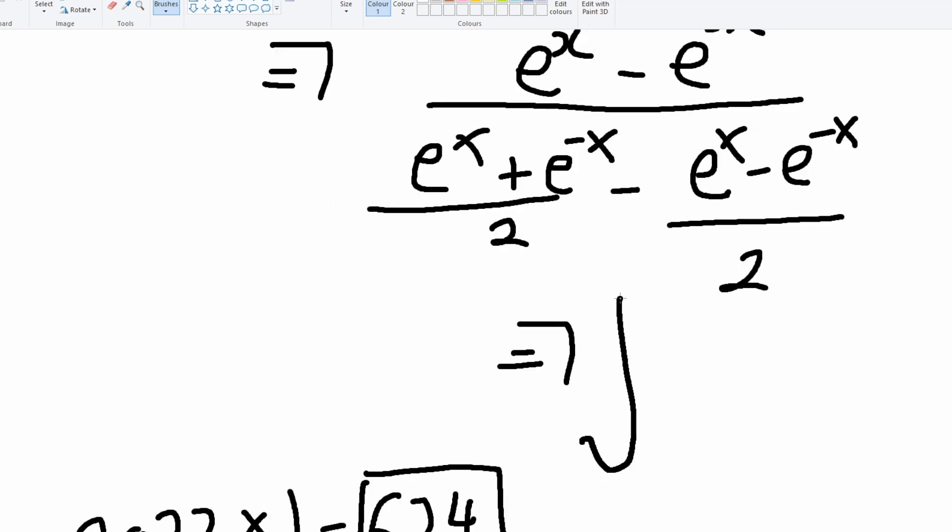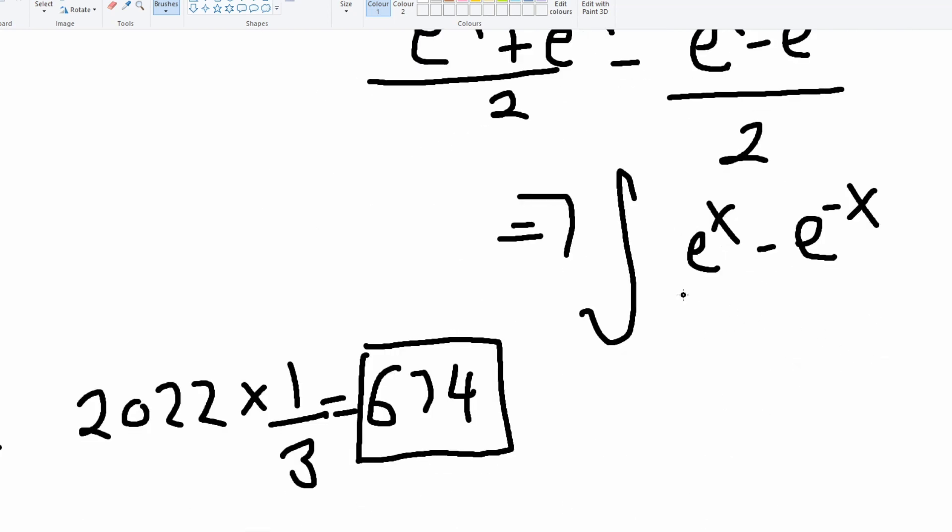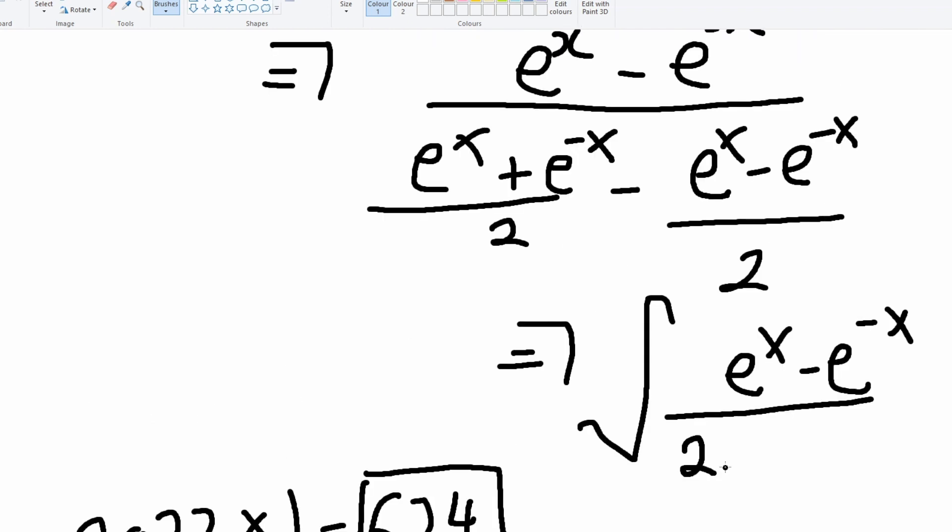So all we're just going to get is just the integral of e to the x minus e to the negative x divided by 2 times e to the negative x.